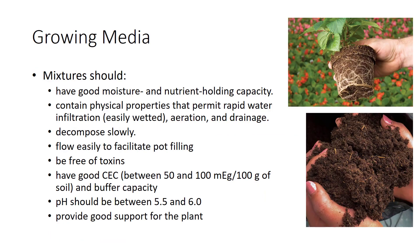Growing media used for potting plants is commonly used to accommodate specific needs such as mixes used solely for promoting germination. Although differences exist in the types of growing media on the market, all mixtures should be reproducible, available, and have basic physical, chemical, and biological properties. Some important functions that all growing media should include are good moisture and nutrient holding capacity, physical properties that permit rapid water infiltration, aeration, and drainage. A good growing medium should contain materials that do not rapidly decompose, flow easily to facilitate rapid pot filling, and be free of toxins.